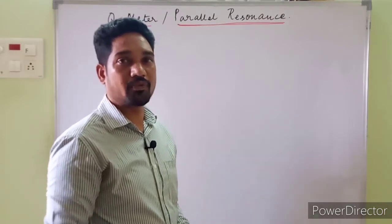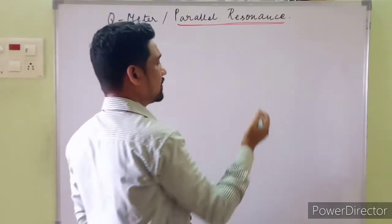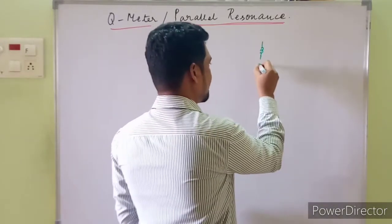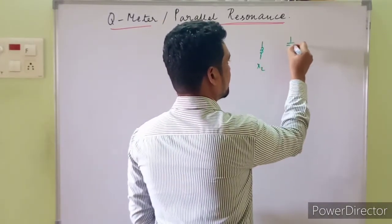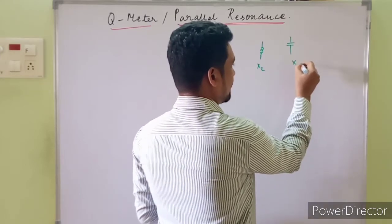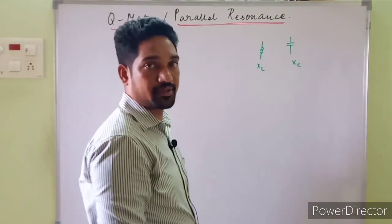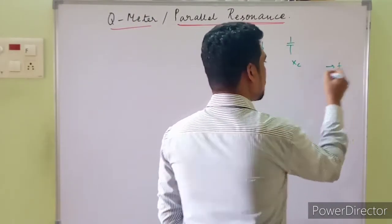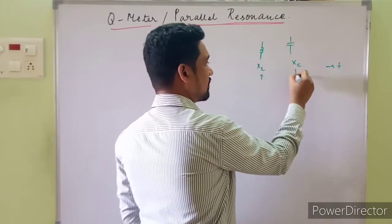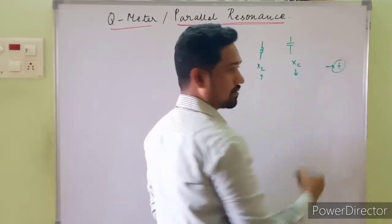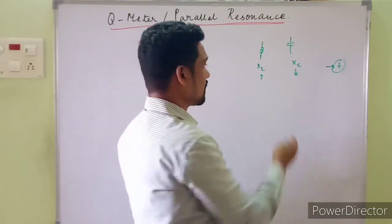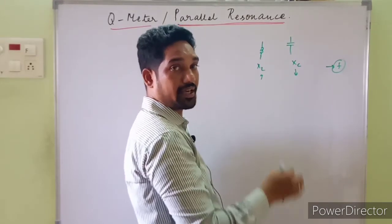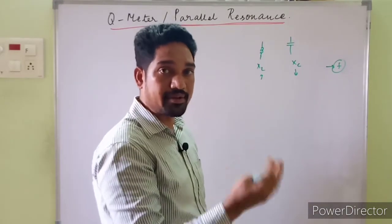So going ahead, what is resonance? If an inductor having inductive reactance XL and a capacitor having capacitive reactance XC are made part of a circuit with a variable frequency. As we increase the frequency, one parameter increases and another comes down. At a particular selected frequency, both reactances will be equal, and that particular frequency is known as the resonance frequency, and the circuit is said to be under resonance.